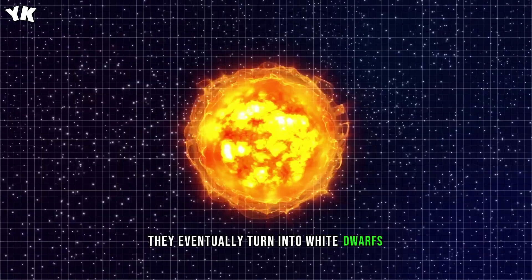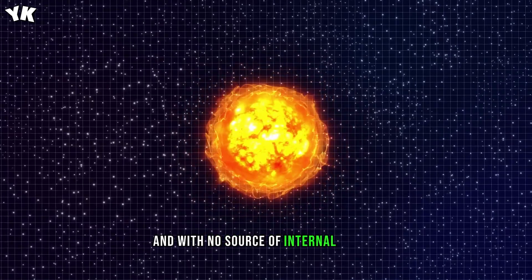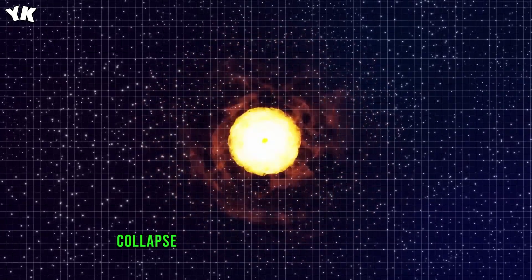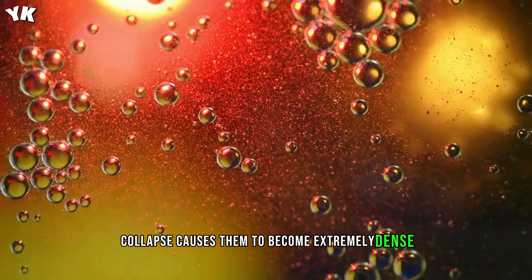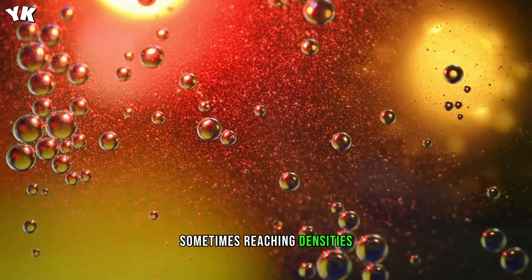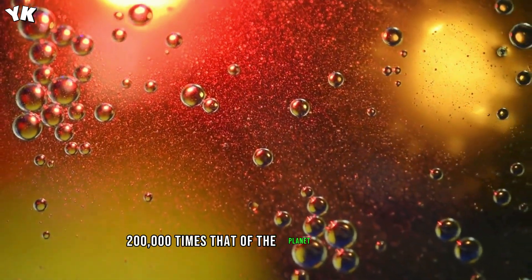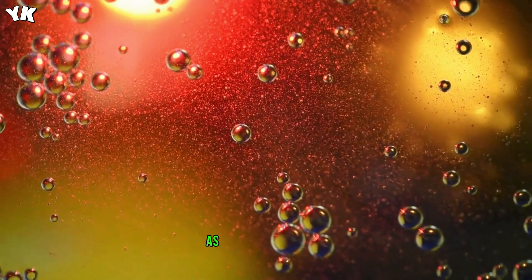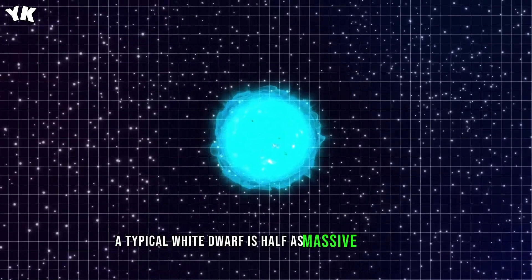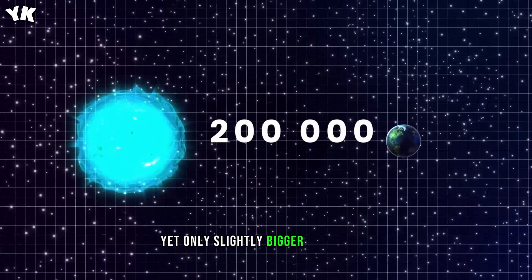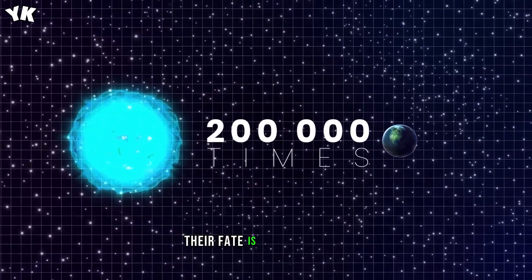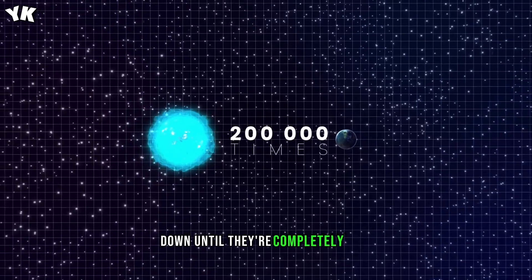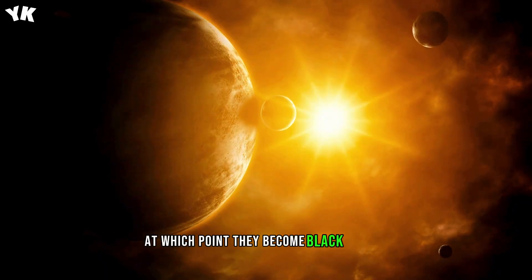They eventually turn into white dwarfs, and with no source of internal energy, their gravitational collapse causes them to become extremely dense, sometimes reaching densities 200,000 times that of planet Earth or more. As a reference point, a typical white dwarf is half as massive as our sun yet only slightly bigger than Earth. Their fate is to slowly cool down until they're completely cold, at which point they become black dwarfs.